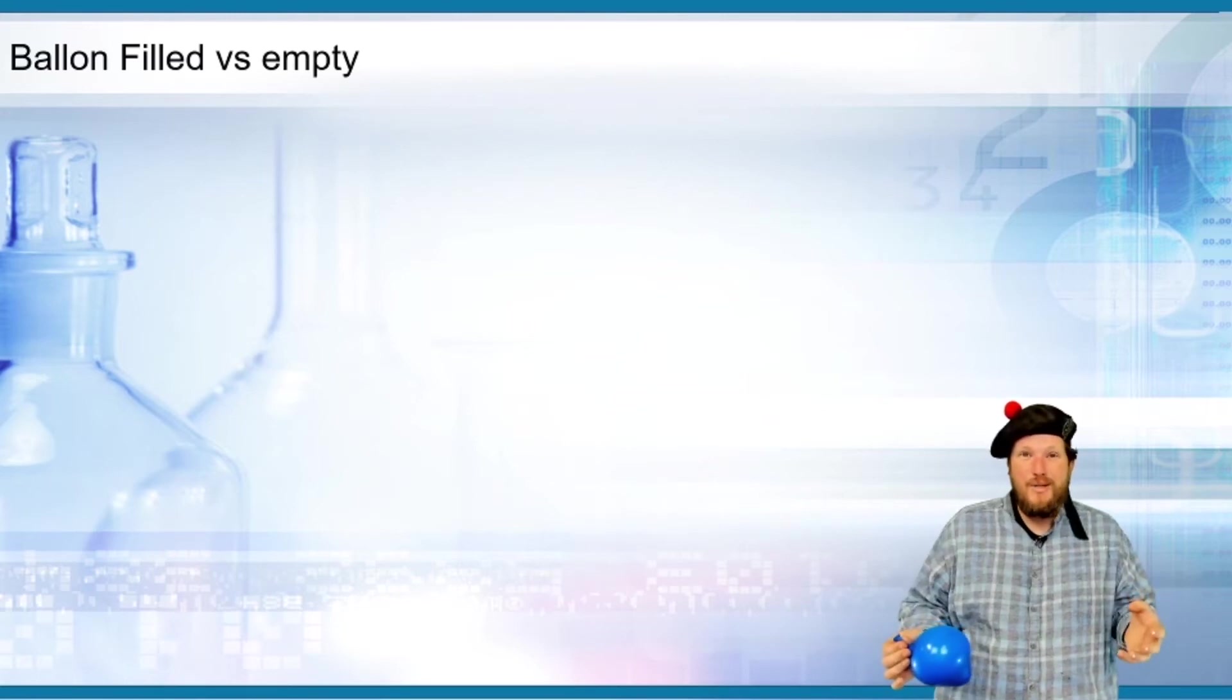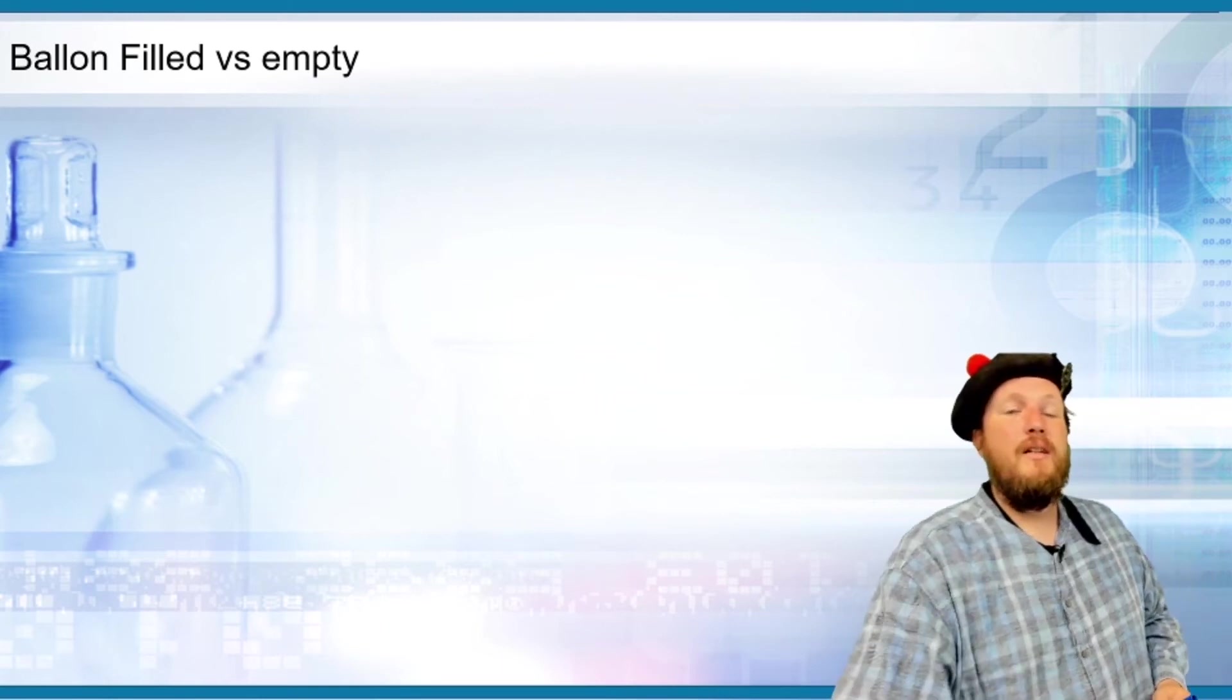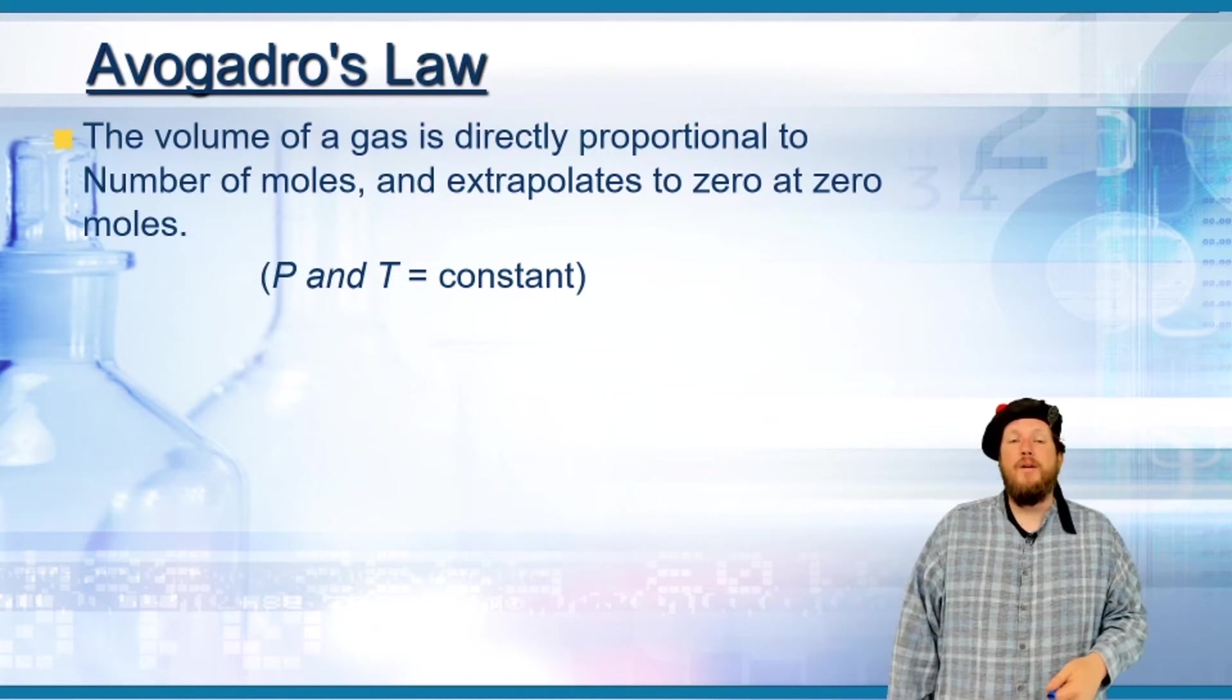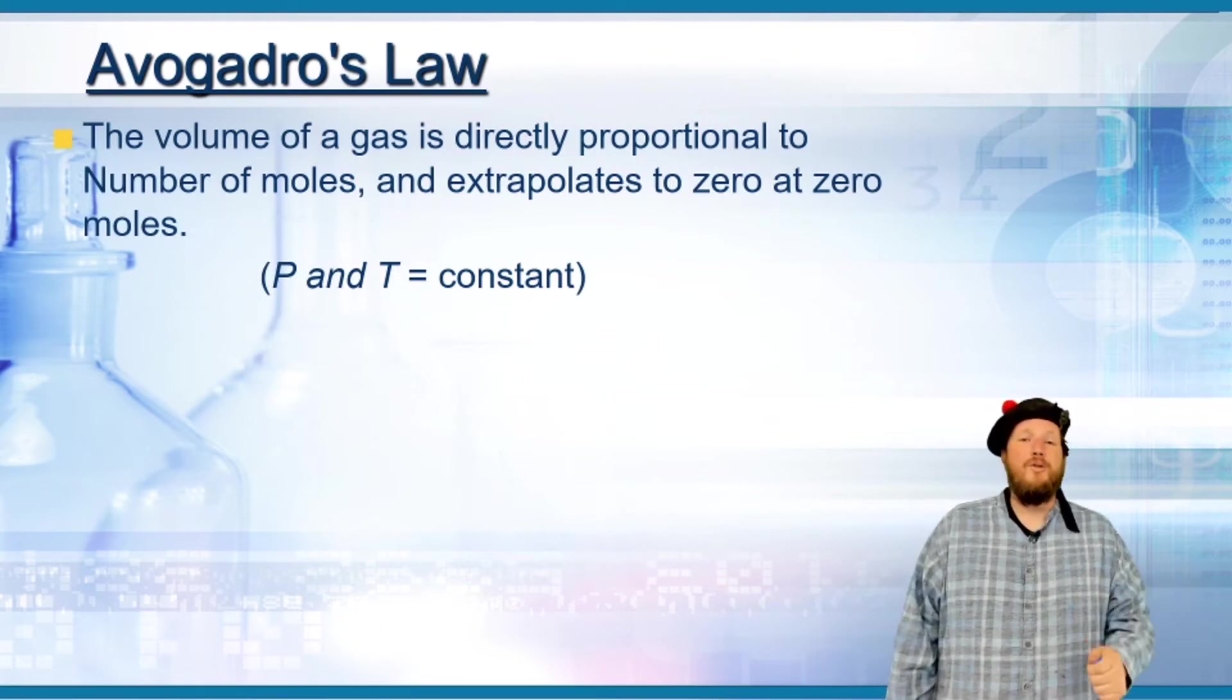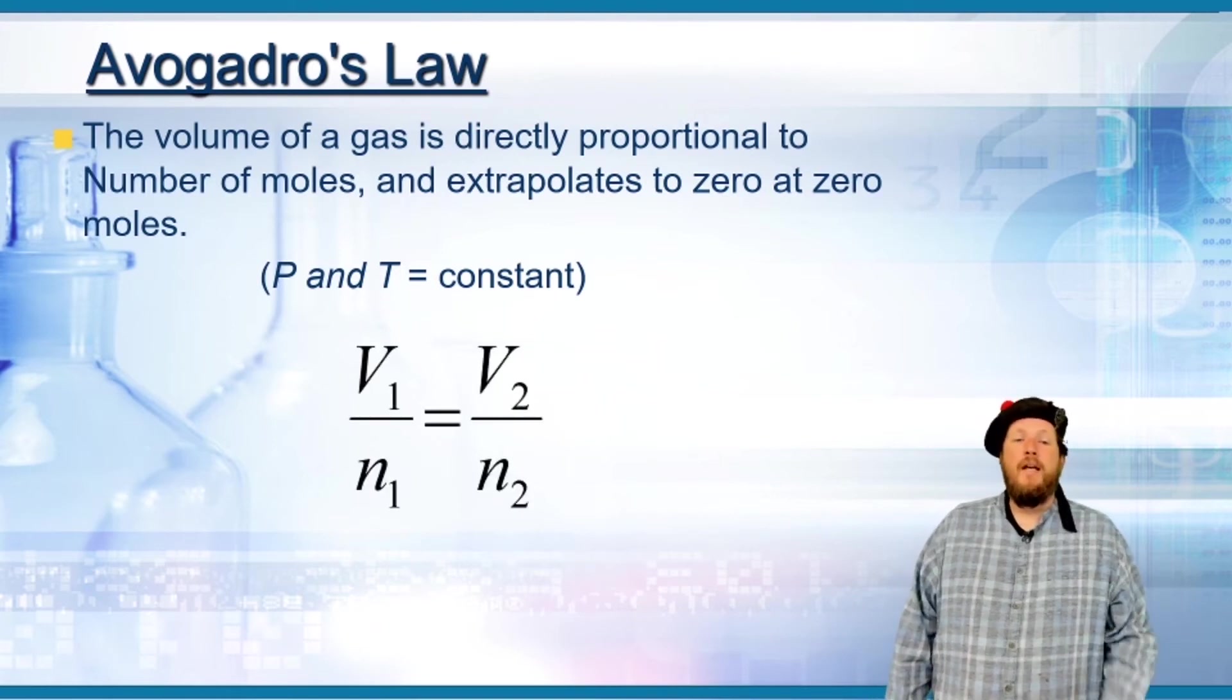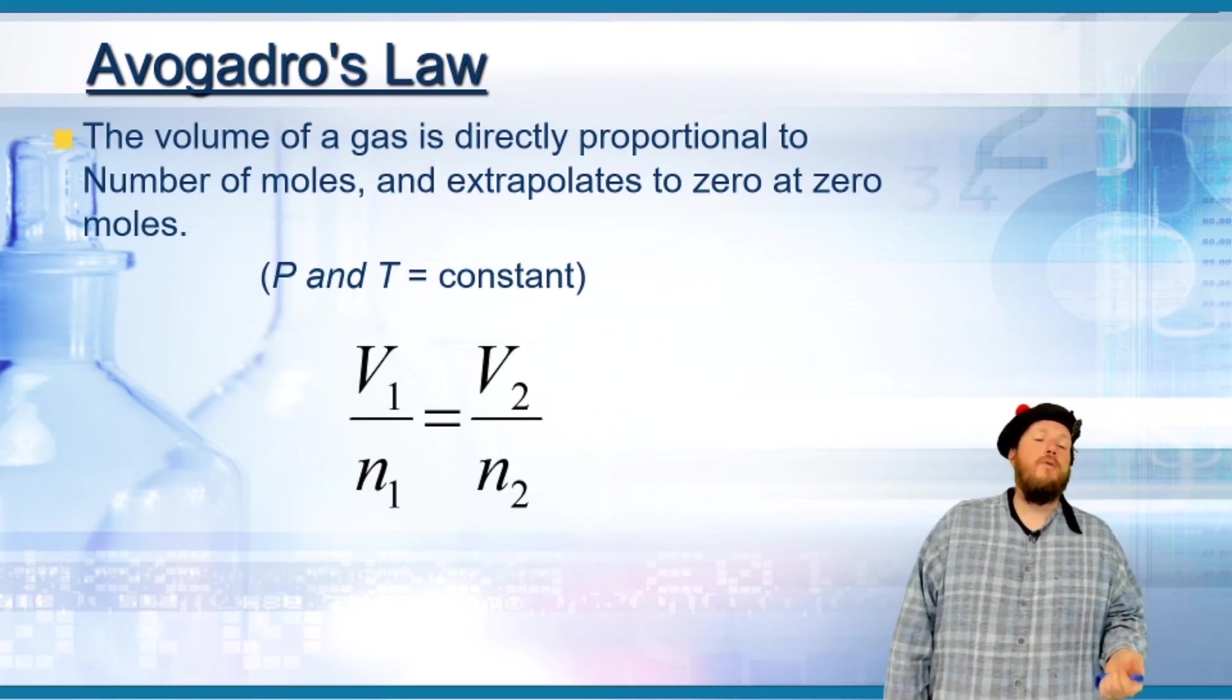Which seems incredibly intuitive, but this was actually proved by Avogadro and was shown to be true. The volume of a gas is directly proportional to the number of moles and extrapolates to zero at zero moles. If pressure and temperature are constant, V1/N1 equals V2/N2.